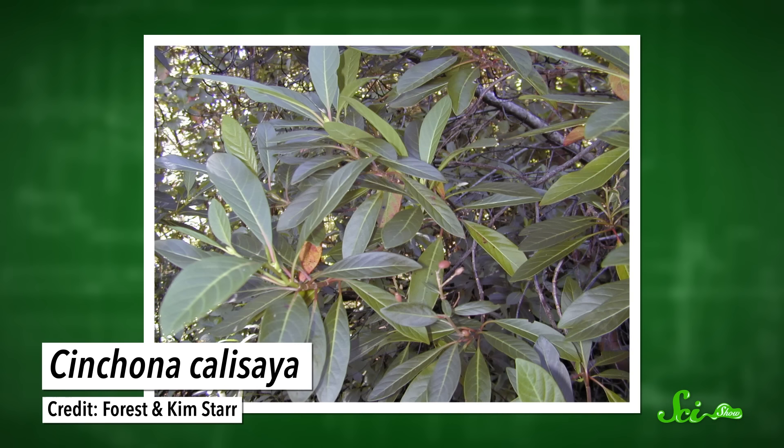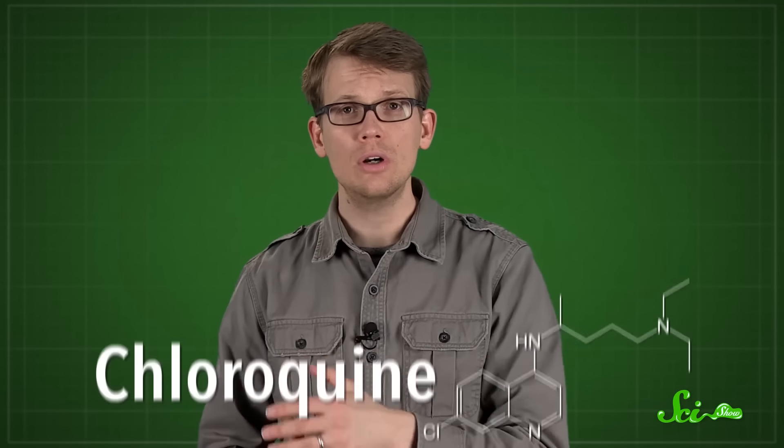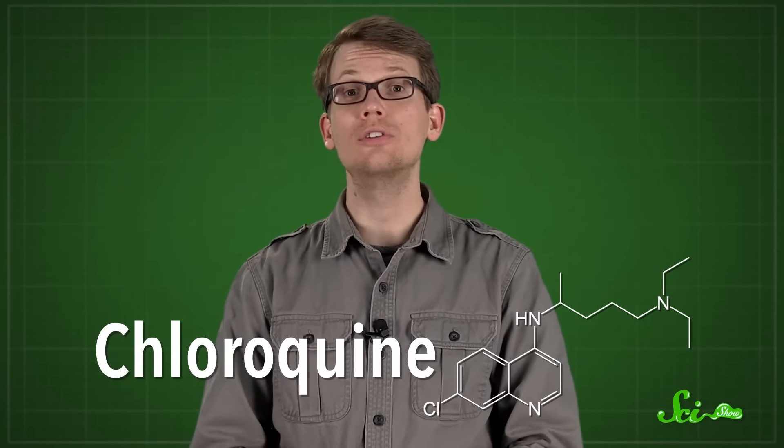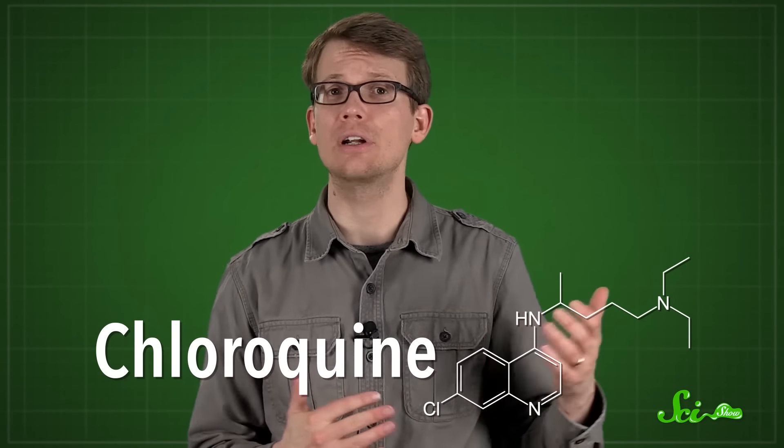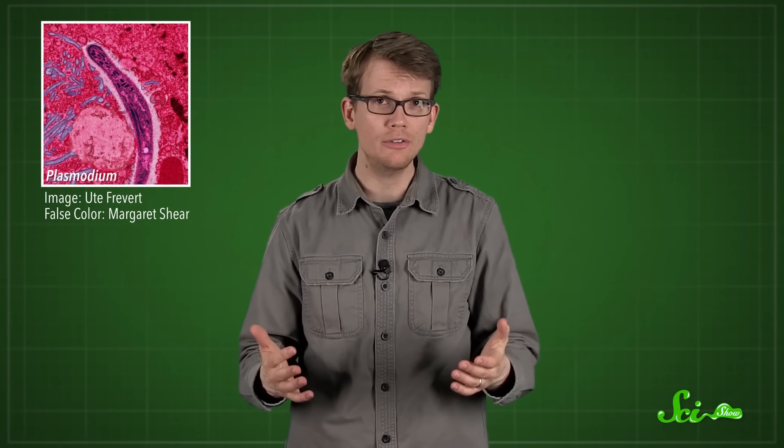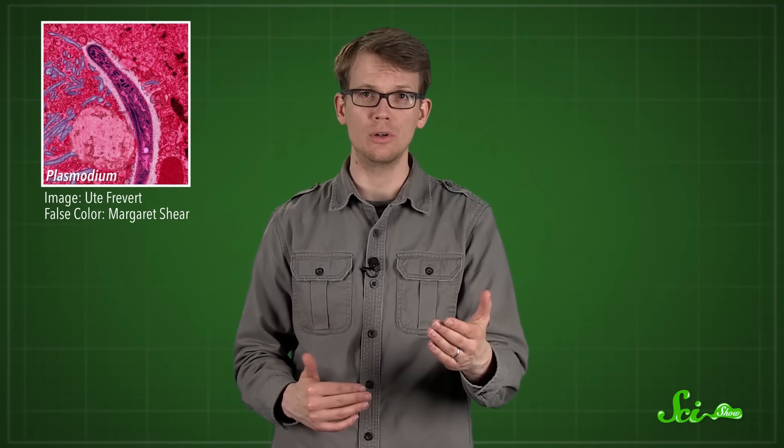One of the first remedies known to be genuinely effective was quinine, an alkaloid that comes from the bark of Peruvian cinchona trees. A compound known as chloroquine, which was based on quinine, was later developed synthetically as a safer and more potent version of the drug. But it wasn't long before the Plasmodium parasite that causes malaria started showing resistance to chloroquine.